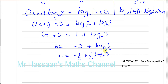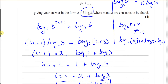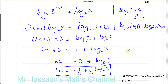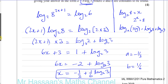This is expressed exactly in the form they want — log to the base 2 of 3. So the value of a is minus one third and the value of b is one sixth. That's part 1 of question number 8.